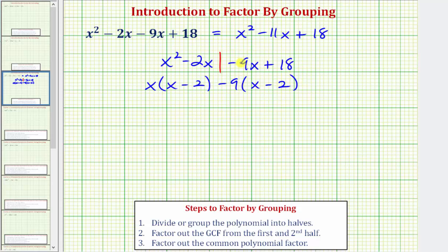Of course, we can always check this by distributing. -9 times x is -9x. -9 times -2 is positive 18.